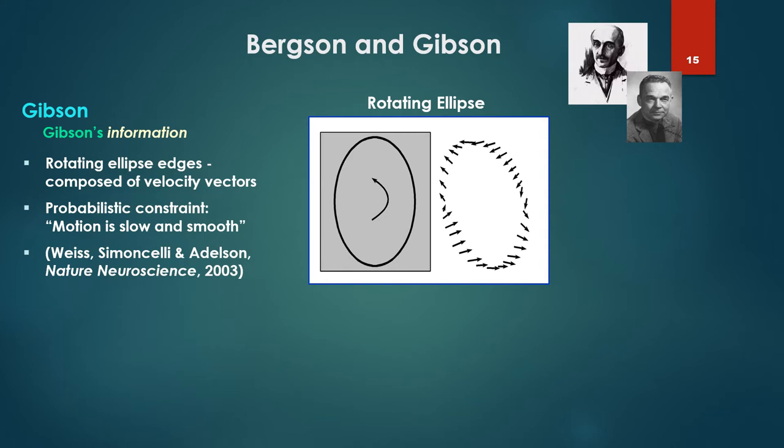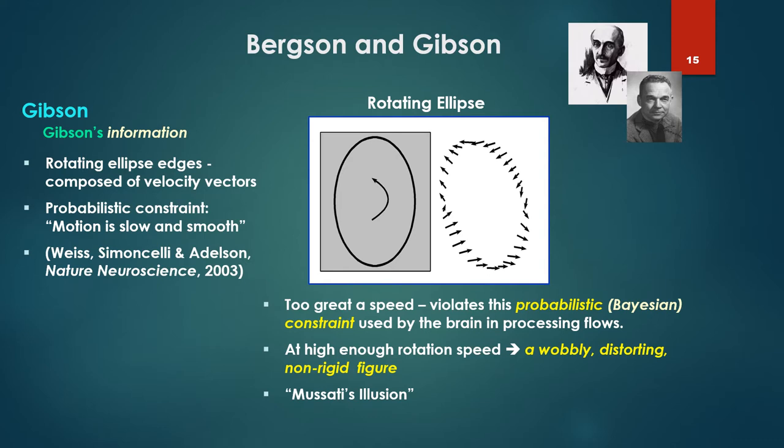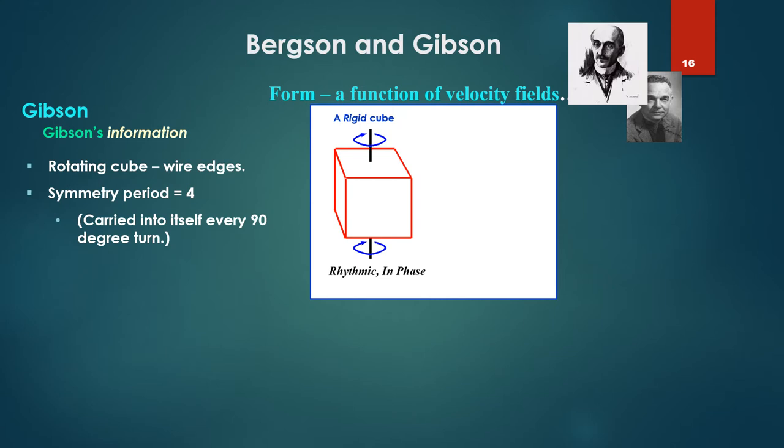Take this rotating ellipse, for example. It's rigid while rotating at a certain speed. Thrown into this model that Weiss, C. Michele, and Adelson described in Nature of Neuroscience 2003, a Bayesian model. You have a probabilistic constraint applied to computing the velocity. This constraint is 'motion is slow and smooth'. It becomes a mathematical constraint on the neural network they described. What you find is at too great a speed of rotation, this probabilistic constraint 'motion is slow and smooth', which is a Bayesian constraint in this framework, violates this constraint. At high enough rotation speed, you get a wobbly, distorted, non-rigid figure known as Musadi's illusion.